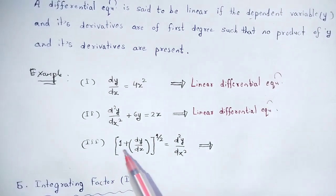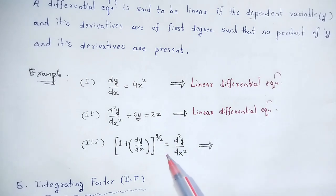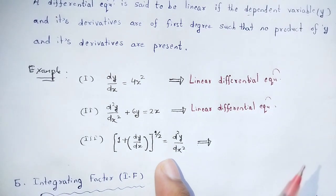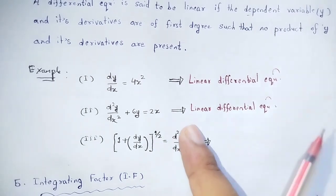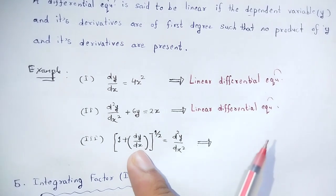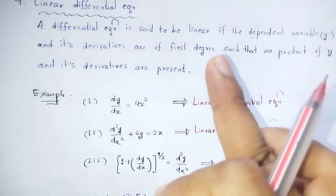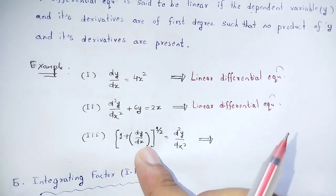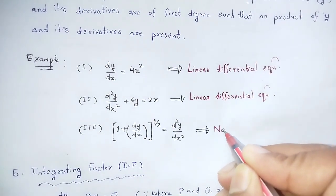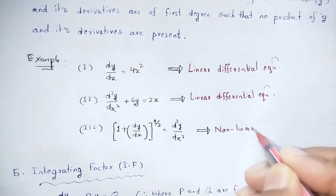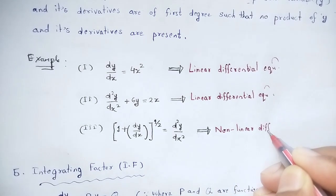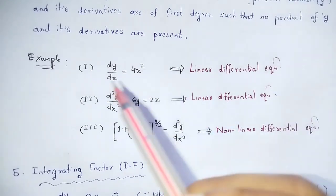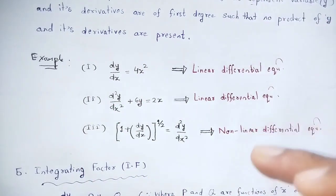Example number 3: (1 + dy/dx)^(1/2) = d²y/dx². The highest derivative is d²y/dx², which is first degree. However, dy/dx appears under a radical. Once we clear the radical, dy/dx will appear to a power other than 1, making this a non-linear differential equation.